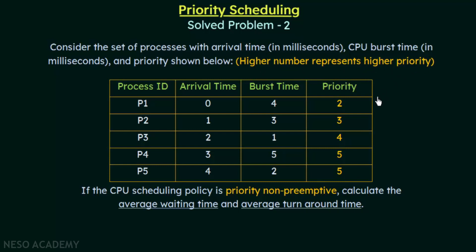In the previous problem that we solved, the lower the value, the higher was the priority. But in this case, the higher the value, the higher will be the priority. So if you look at this priority list, 5 is the highest priority and 2 is the lowest priority. In some cases, the lower number may represent higher priority and in some cases, the higher number may represent the higher priority. Pay close attention to the question, otherwise you may make a mistake.